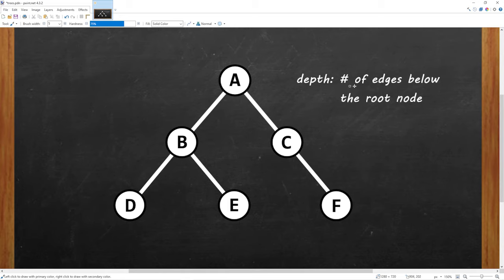The depth of a node is the number of edges below the root node. Our root node would have a depth of zero. Then as we move down levels, B and C have a depth of one. D, E and F have a depth of two.